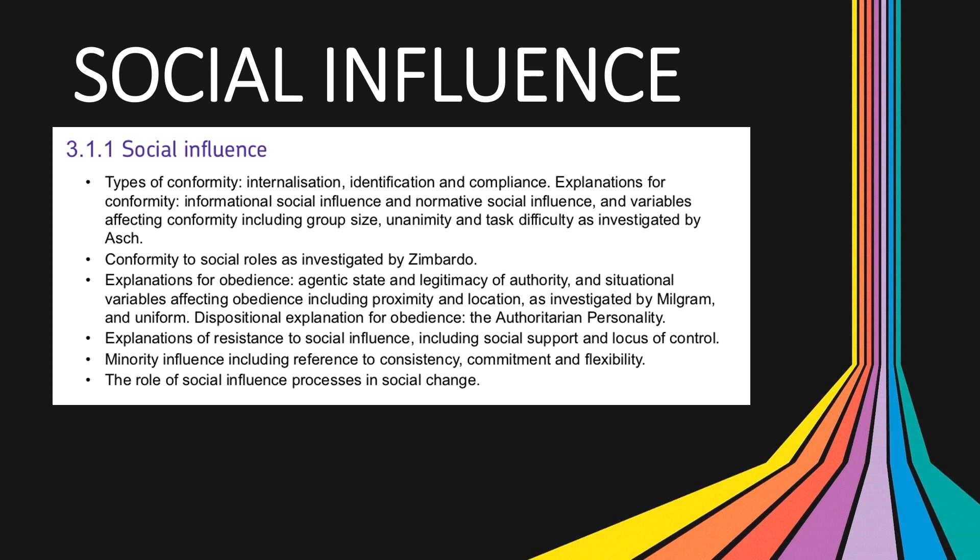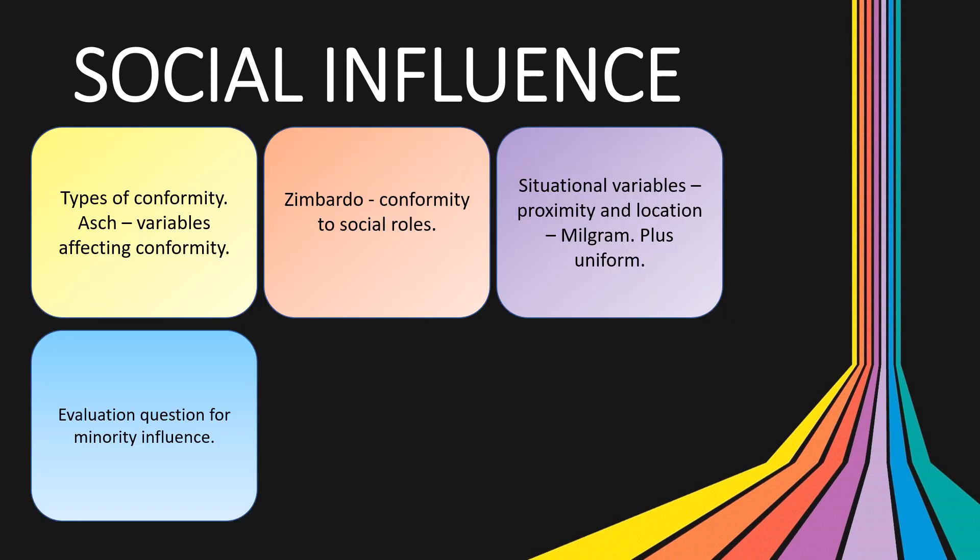Let's take a look at social influence. Here's our starting point — the specification that I'm going to be working through. I strongly advise you to print off a copy from the AQA website, grab a highlighter and make some notes as I go through. The first area of interest in social influence is the types of conformity: identification, internalization and compliance. These haven't been mentioned at all yet, so there's potential scope for a 16-mark question and also maybe a differences question between the types of conformity.